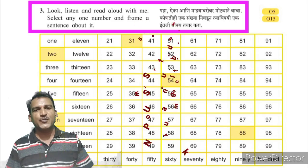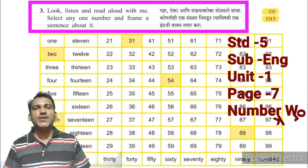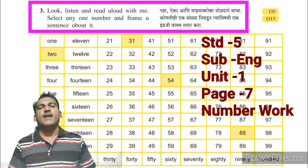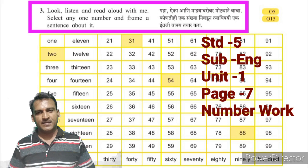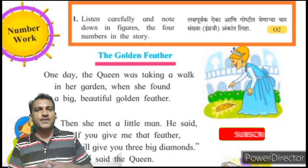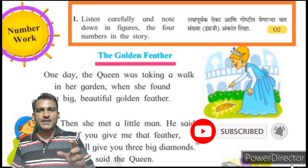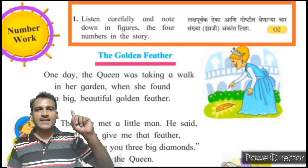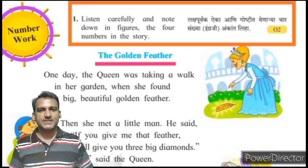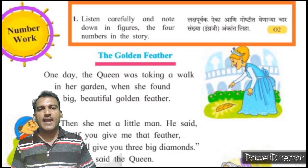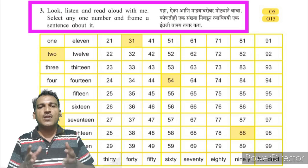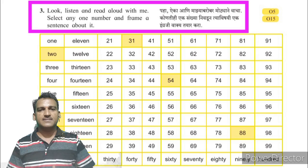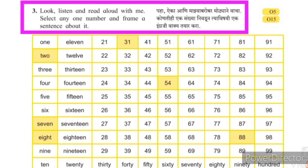Hello friends, welcome to Root Care Raju channel. Today we are going to learn about Standard 5 subject English, Unit 1, page number 7. Our today's topic is Number Work. We have learned about page number 6 in the previous video — that was the wonderful story 'The Golden Feather.' You can touch the i-button for the link to the previous video. Today we are going to learn about Instruction number 3 and further instructions.